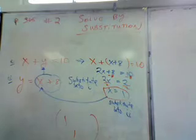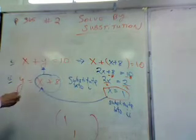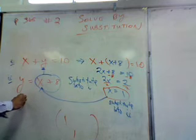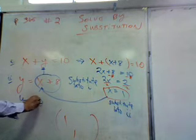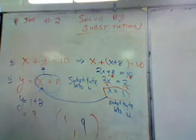Write this down. If you're not already writing them down, please do. You substitute that into 2. So this becomes y equals what? 1 plus 8, which equals 9. And your answer here is 1, 9. That's your solution.